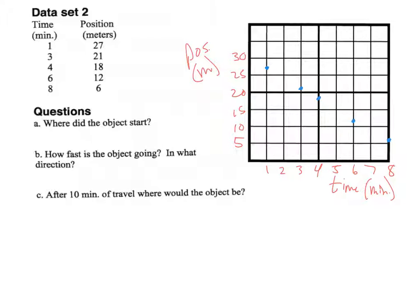Using a piece of mail as a straight edge again — and that actually looks pretty good! The line crosses right up near 30 on the position axis. Where did the object start? When time is zero, you go up and hit the line — it's at 30 meters. Make sure you're using units: 30 meters is the starting position.